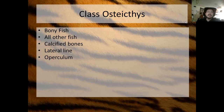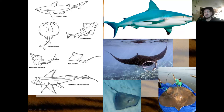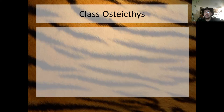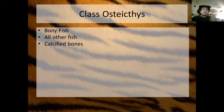Osteichthyes can stay still because the operculum pumps water over the gills. Chondrichthyes do not have an operculum, meaning they have no method of pumping water over their gills when staying still. So if they're not in an area of high current, they cannot sit still — if they sit still, they'll suffocate. Sharks tend to be constantly in motion because they have to move to breathe.